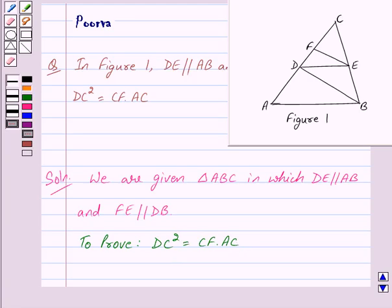First, we consider triangle CAB. In triangle CAB, we have DE parallel to AB, which is given to us.